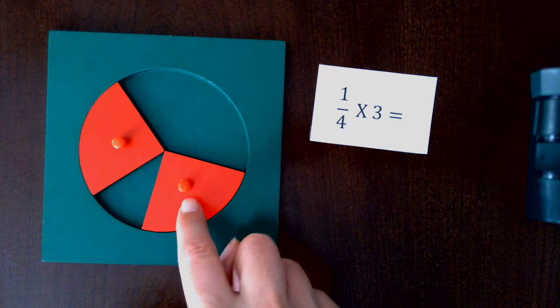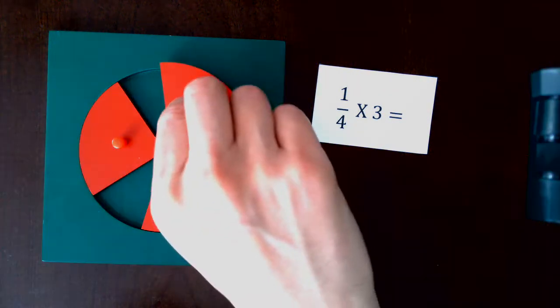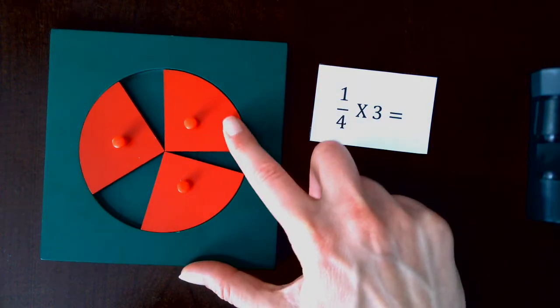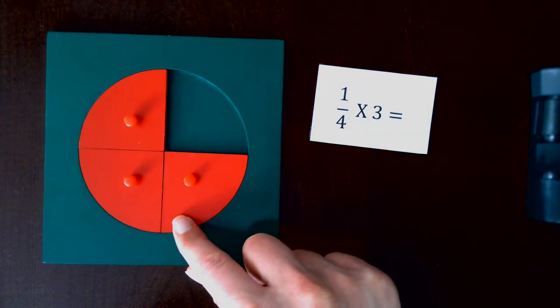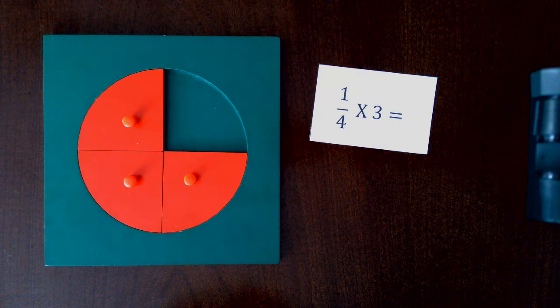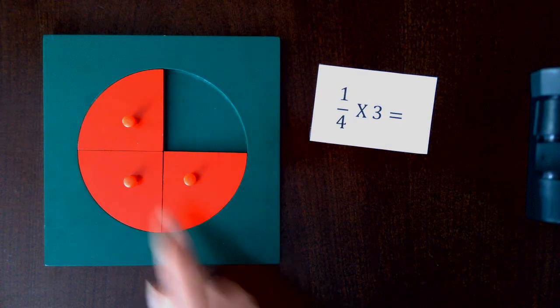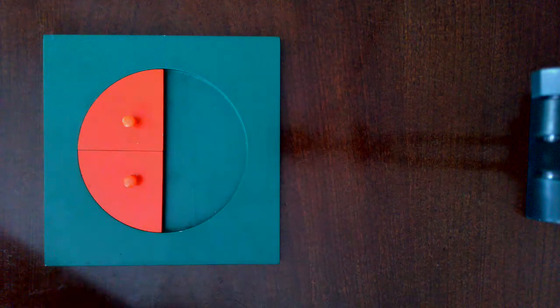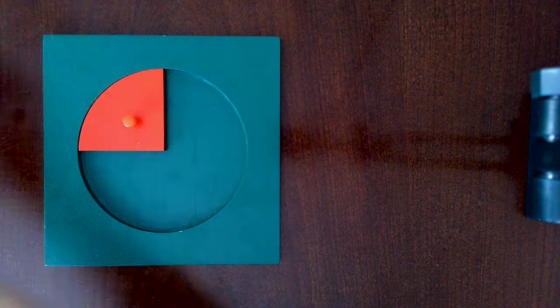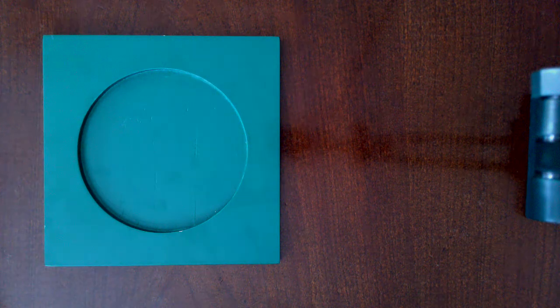There's one, two, three. Let's push them together. And what do we have now? That's right, three-fourths. Once they've done a bunch of those problems, they can learn the rule or record the rule if they've discovered it.